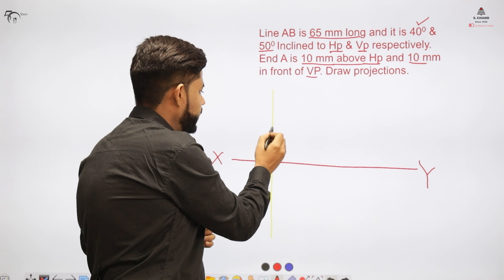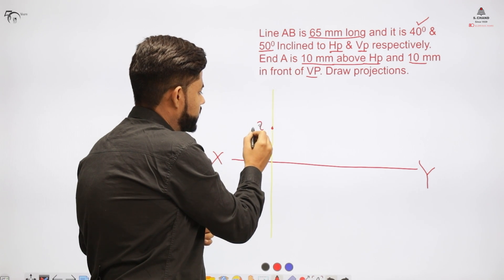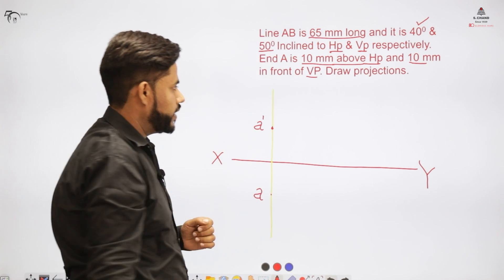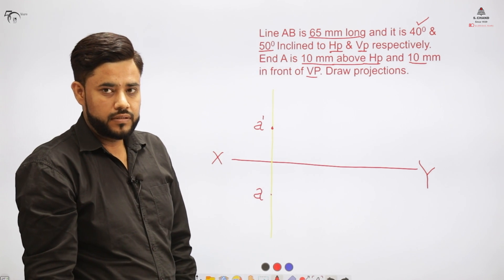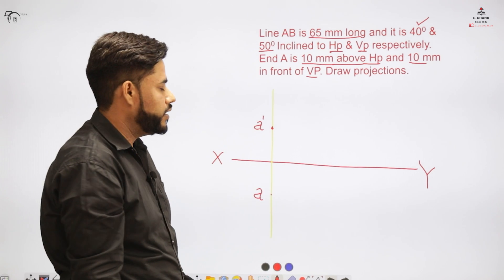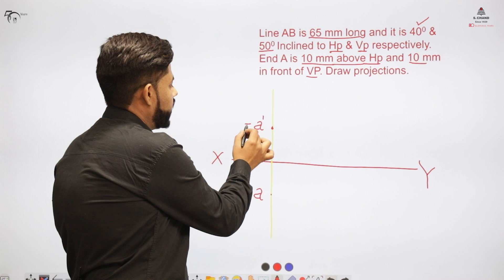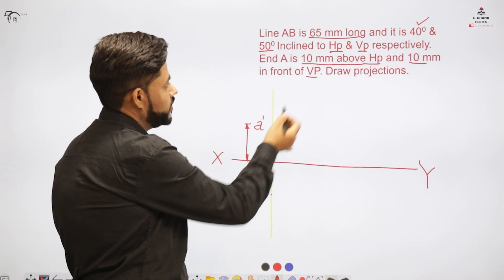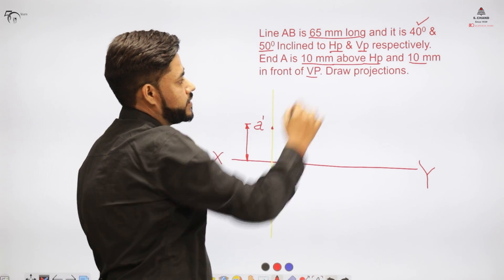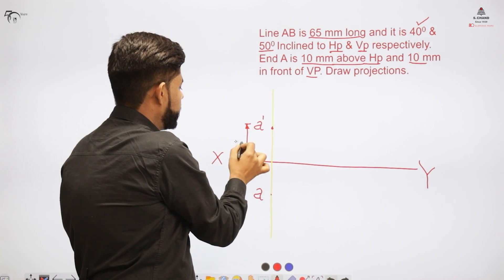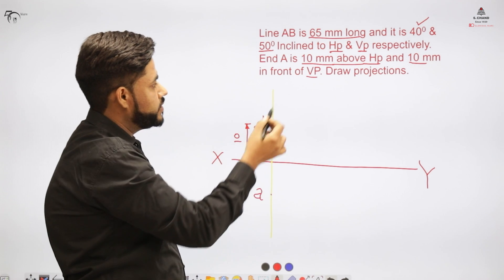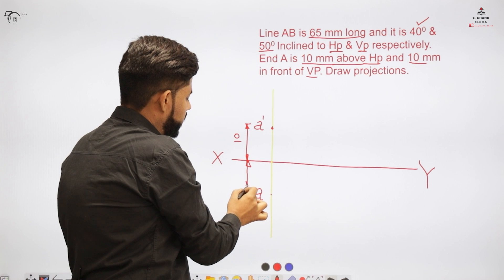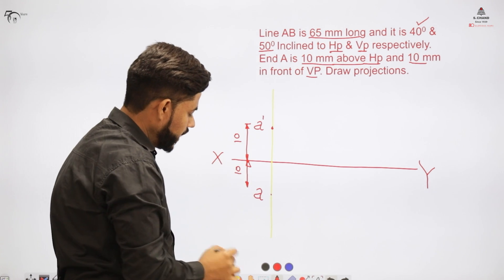In the first quadrant, we know that the front view is above the XY line and the top view is below the XY line — as per the previous concepts we already know. Now I need to indicate the distances: the HP distance is linked with the front view, so that distance is 10 mm, and the VP distance is linked with the top view, so that distance is also 10 mm.